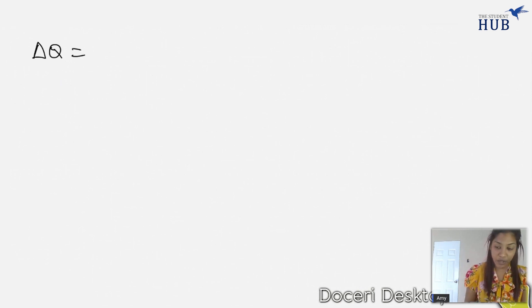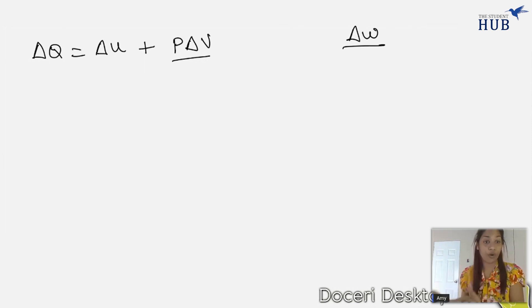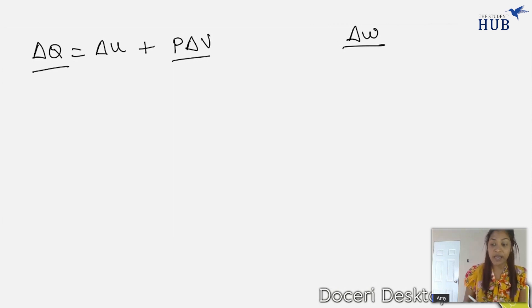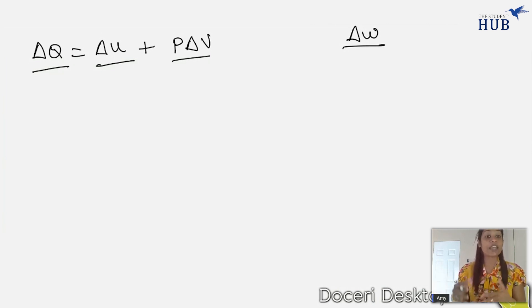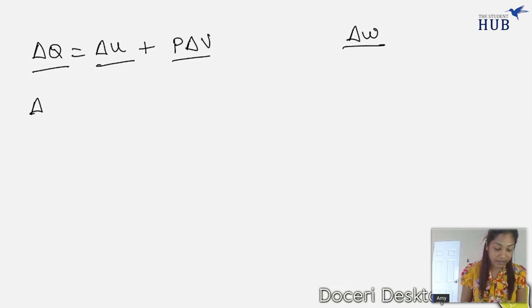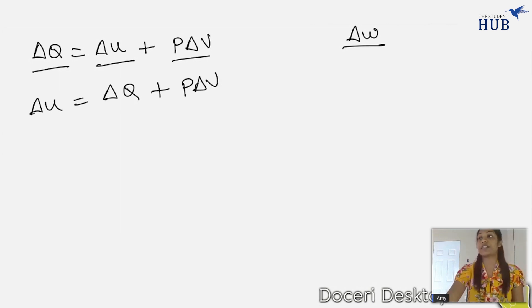The energy in the system equals the internal energy plus the work done. Sometimes you will see p·ΔV or ΔW — it's the same concept, the same work done on the system. So: ΔQ is the heat energy supplied, ΔU is the increase in internal energy, and p·ΔV is the work done by the gas on the surroundings, where p is constant pressure and ΔV is the change in volume.